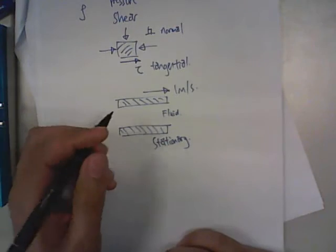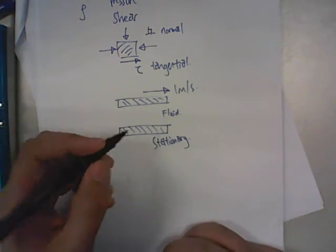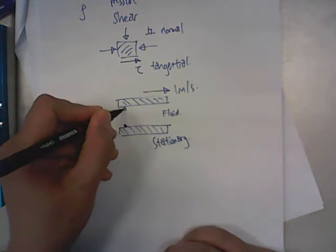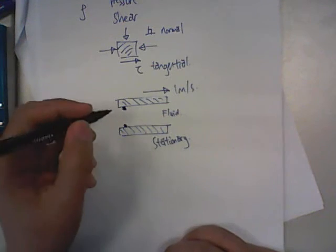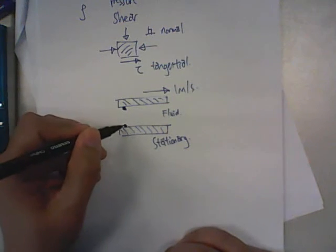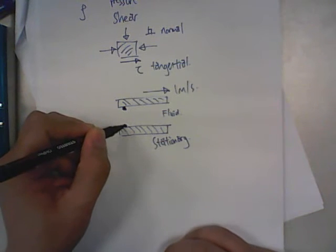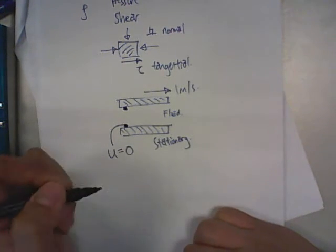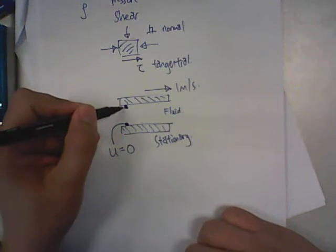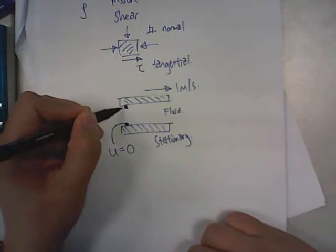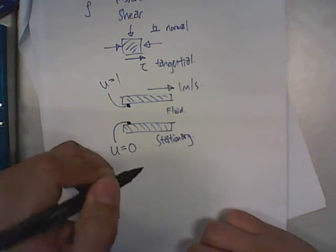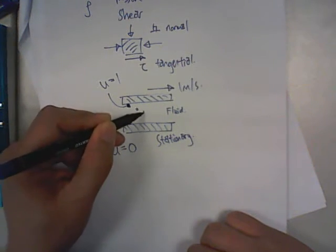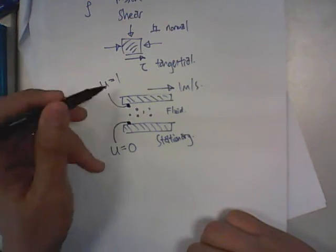So the question is how will the fluid in between these two surfaces behave? First of all we need to say that there is this thing called the no slip condition. It means that the fluid particle that is next to the surface will follow the speed of the surface itself. So for this particular particle next to the stationary surface, the speed here will be 0. Whereas for the particle right next to the moving plate on top, the speed will be 1.